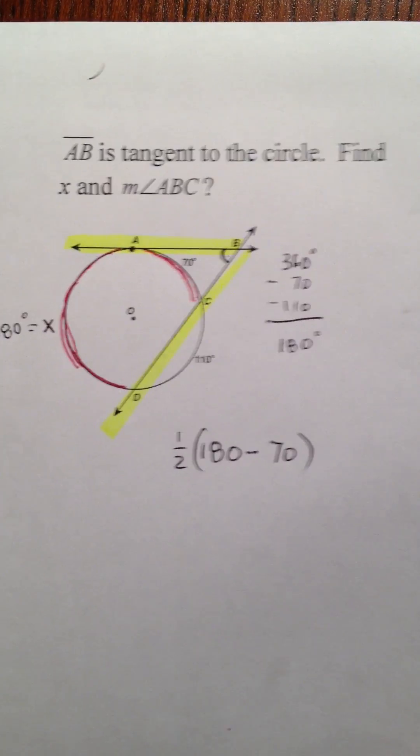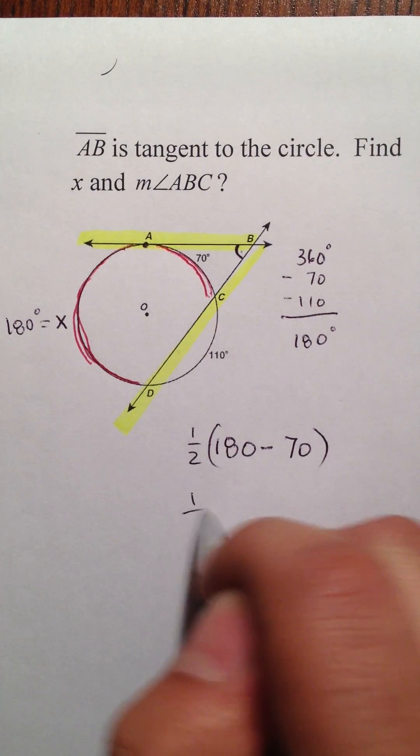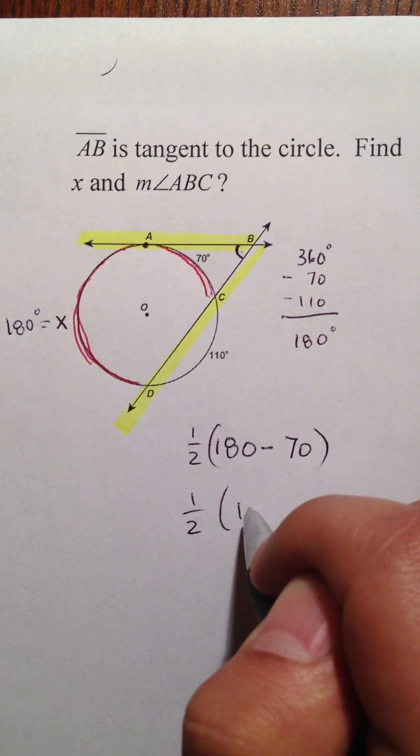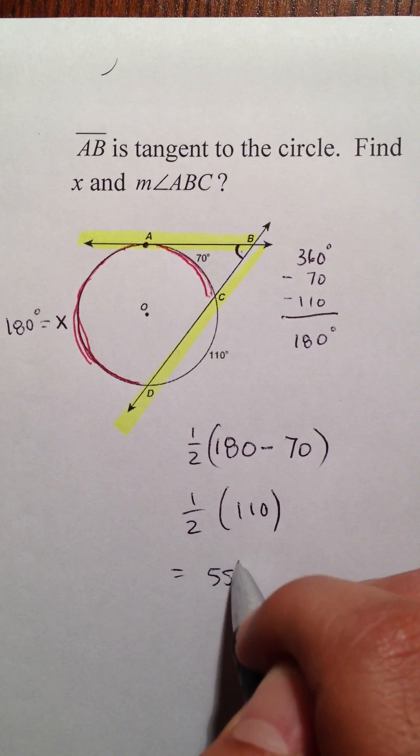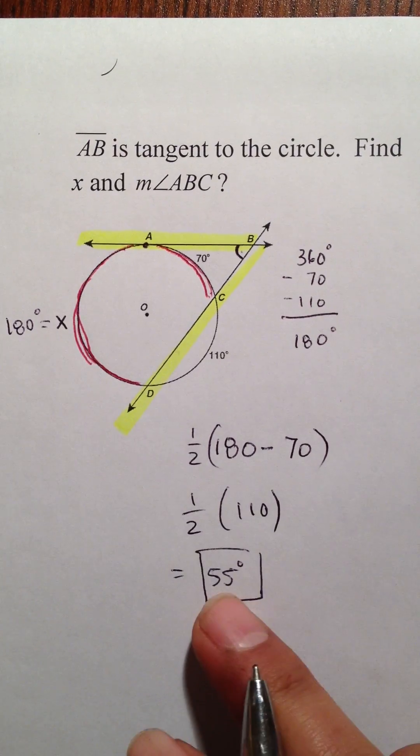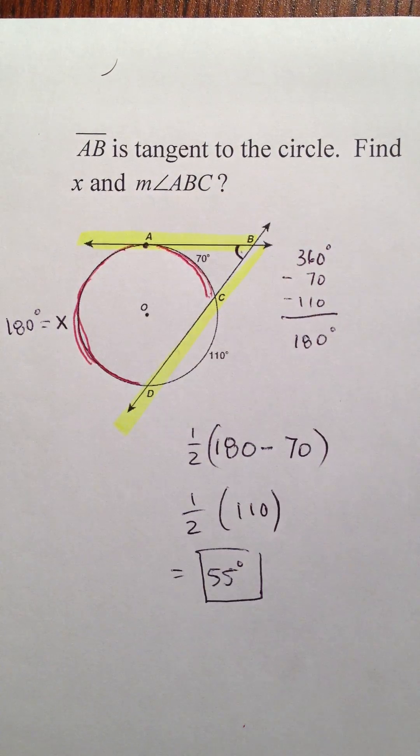And again, this works every single time. So, one half of 110 is 55 degrees. And this is how you find an exterior angle outside a circle.